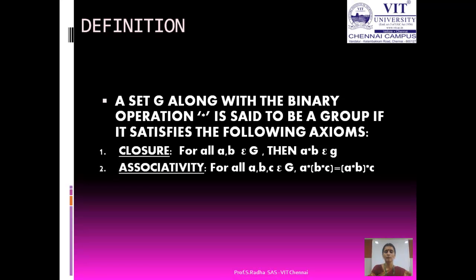Associativity. For all a, b, c belonging to G, if (a star b) star c is equal to a star (b star c), then elements of G are said to satisfy the associative property.